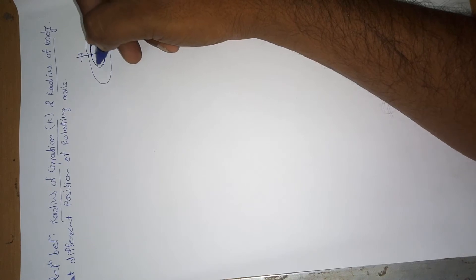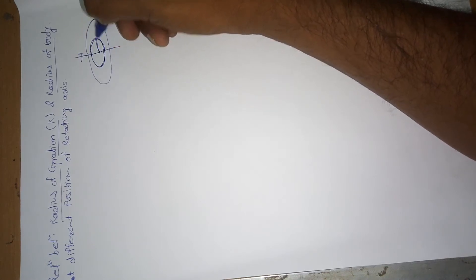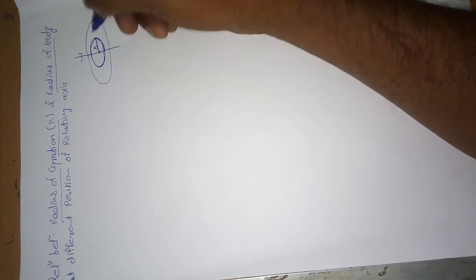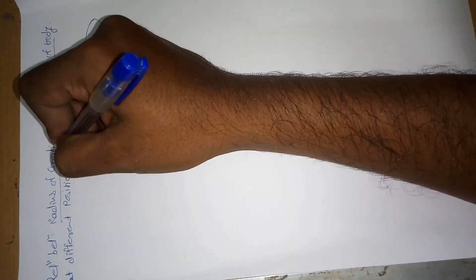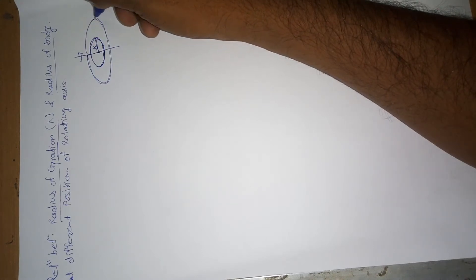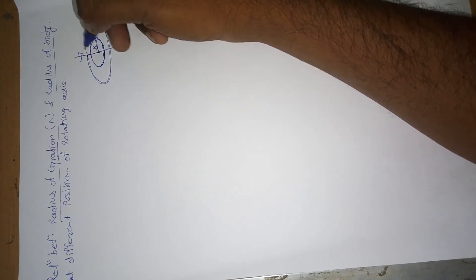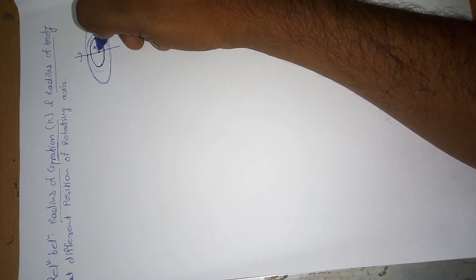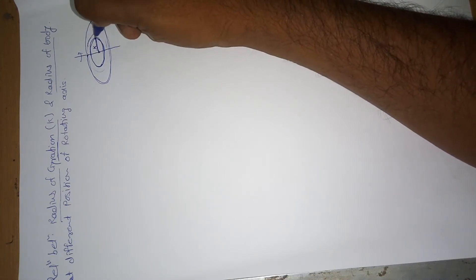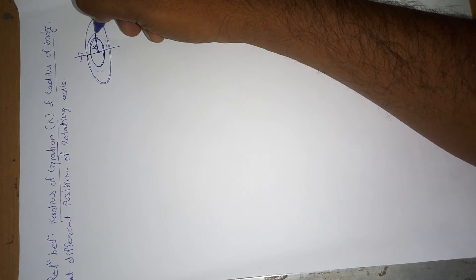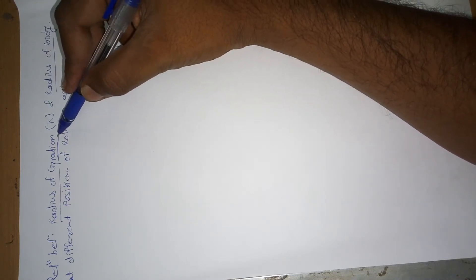We draw a circle at that axis of rotation — a circular shape. The distance from the rotating axis to the mass point is the radius of gyration. This applies to an irregular shape body as well as a regular shape body. We consider this small mass particle rotating in a circular form — this is the concentrated mass particle, and the distance is the radius of gyration.